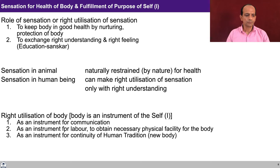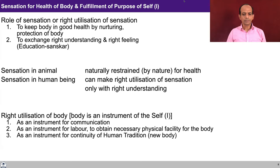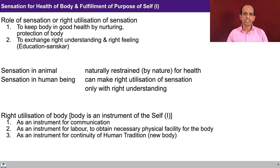In the case of a human being, one can make right utilization of sensation only with right understanding. If right understanding is not there, one may go into indulgence without ever knowing whether it will ensure happiness in continuity. If you look at the right utilization of the body — body being an instrument of the self — there are three ways: as an instrument for communication, as an instrument for labor to obtain the necessary physical facility for the body, and as an instrument for continuity of human tradition, that is to generate the new body through procreation.